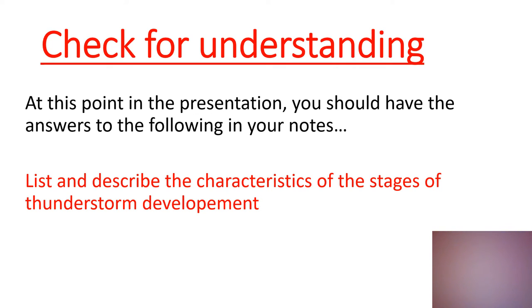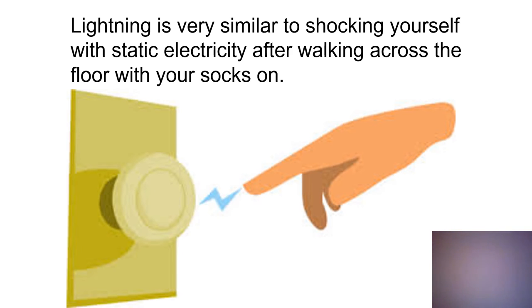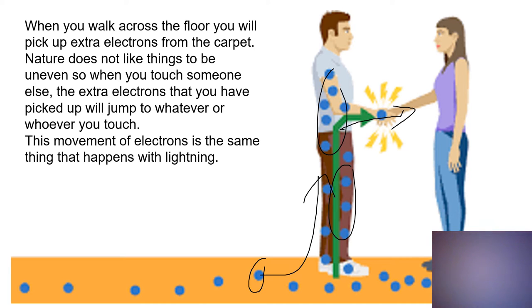A check for understanding: list the stages and characteristics of thunderstorm development. Now, thunderstorms have to have thunder and lightning — so what is lightning? Lightning is just static electricity — the accumulation of extra charge or extra electrons in one place. Lightning is the same thing you get when you shock yourself on a metal doorknob after walking across the carpet. You walk across the carpet, pick up extra electrons, and nature doesn't like things to be unequal. So if you touch something, nature makes those extra electrons zap to the other thing. That movement of electrons — that zapping — is all that lightning is: the discharge of static electricity.